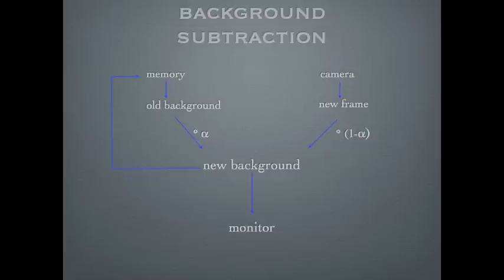Alpha is between 0 and 1. It's a factor that manipulates how long it takes for a new object to become part of the background. After calculation, the new background is stored back to memory for the next computing, and is also displayed in the first window on the left of the monitor.